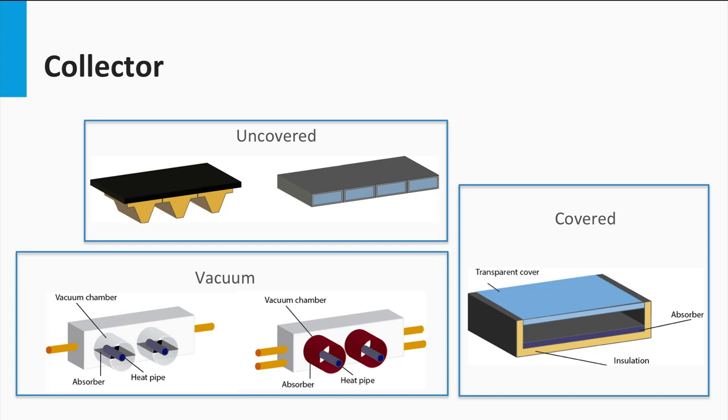Finally, in vacuum collectors the absorber is encapsulated in a vacuum space. In that case, little heat is lost to the surroundings. The manufacturing process of these collectors is more complicated and expensive, but the collector can be used for relatively high temperature applications, since the convection losses to the surroundings are considerably lower than for the other types.